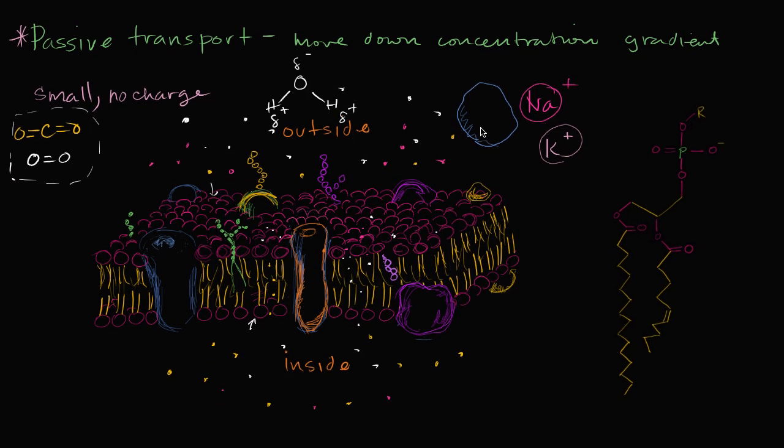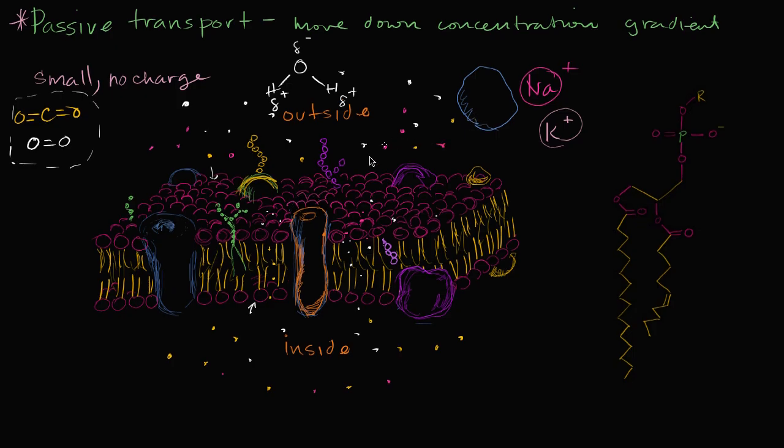So what we're going to talk about in this video is facilitated diffusion. So the last video was just straight up diffusion. Now we're going to talk about facilitating it. So what do you think, if you were trying to engineer something that would make it easy for these types of molecules, either a water molecule or an ion, to move down its concentration gradient, what would you do?